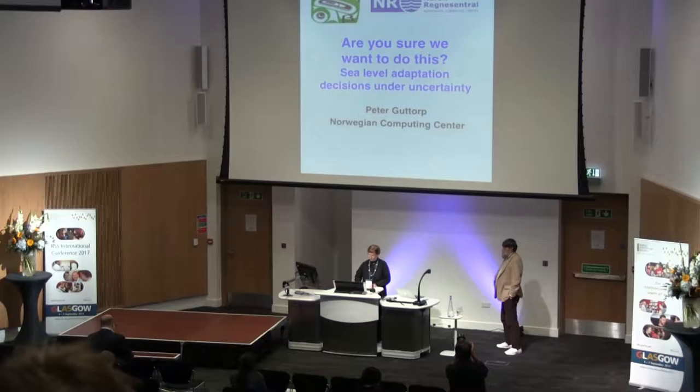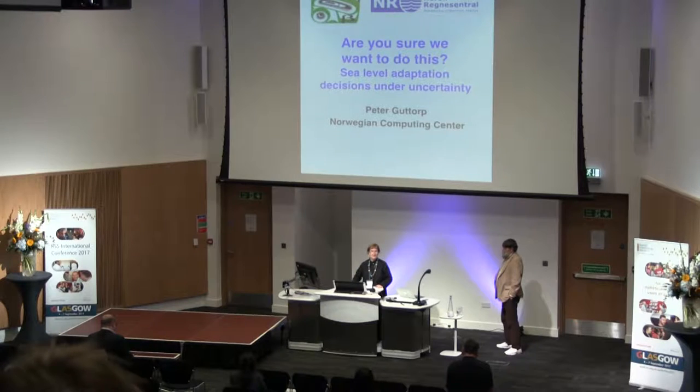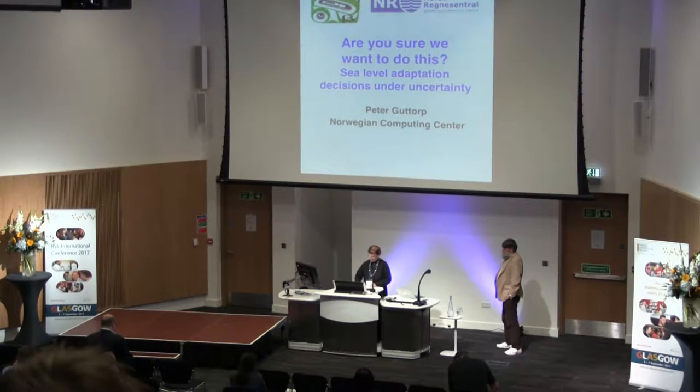This year we have Professor Peter Guttorp, who is an Emeritus Professor at the University of Washington where he's been since 1980. He's well known for his development of statistical methodology in diverse areas of environmental statistics. He has students and collaborators around the world. He's well known for his communication of statistical results not just to us but to the wider world. He's currently a professor at the Norwegian Computing Centre working on diverse projects in climate science. He's a fellow of the American Statistical Association and the Institute for Mathematical Statistics and has received numerous awards for his work, including this Barnett lecture.